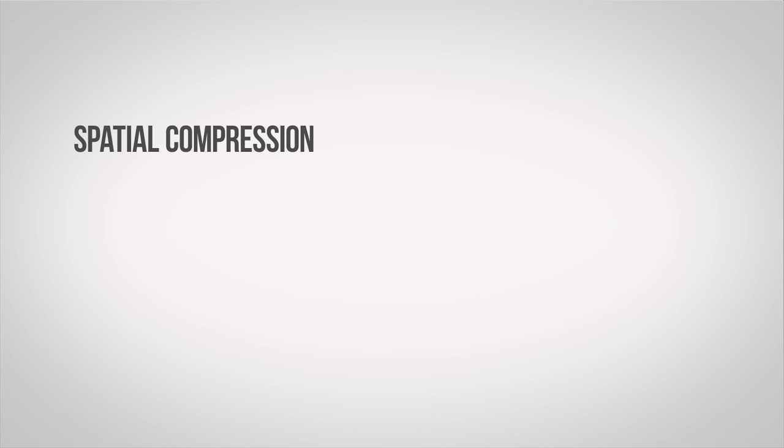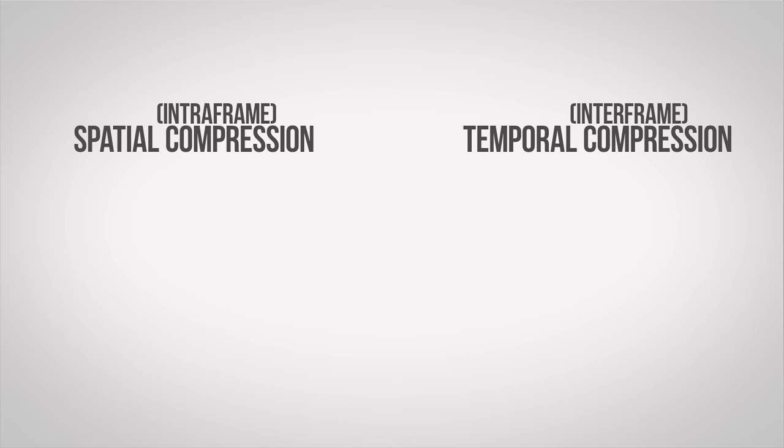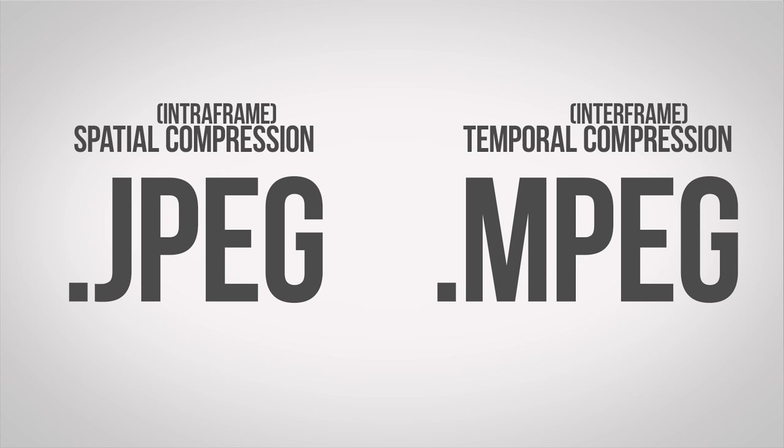There are two ways to compress video, spatial compression and temporal compression, also known as intraframe and interframe, respectively. Seriously, who names this stuff? Anyway, I'm going to describe each of these in terms of the JPEG image format and the MPEG video format.